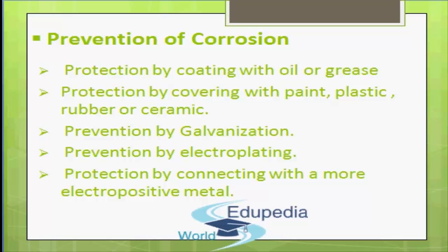The third method is prevention by galvanization. Corrosion is prevented by coating iron objects with a thin layer of zinc. This process is called galvanization. Zinc is a more reactive metal than iron and it reacts with air in preference to iron. When exposed to moist air, zinc, being more electropositive than iron, gets oxidized, protecting iron from oxidation.